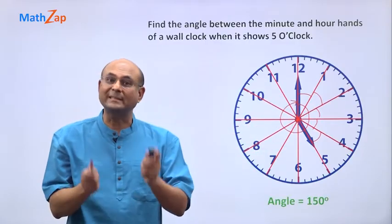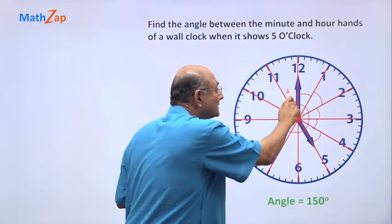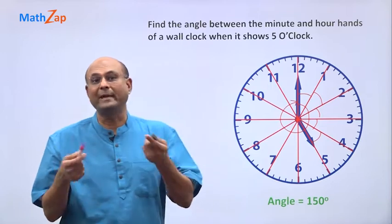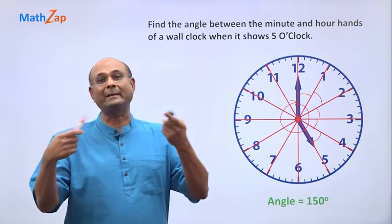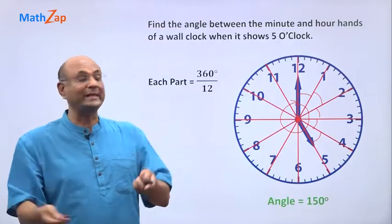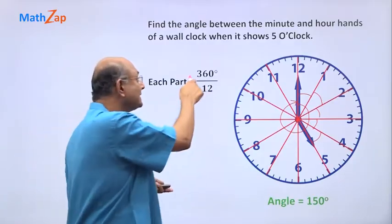A complete angle is 360 degrees. So how much is each part? Each part is 360 divided by 12. Because 12 of them make 360. So each part is 360 by 12. 12 into 3 is 36. So 12 into 30 is 360.